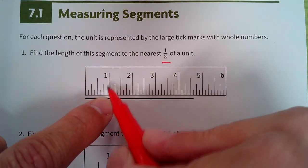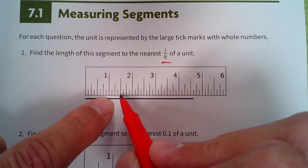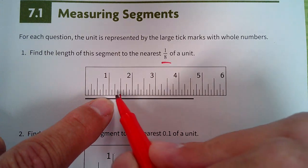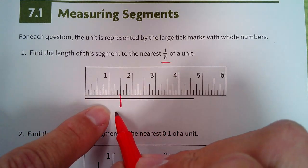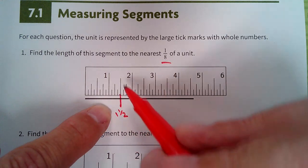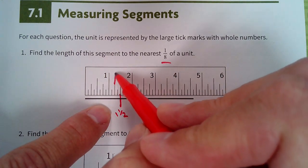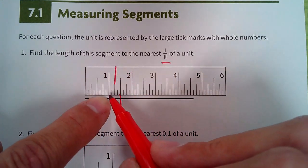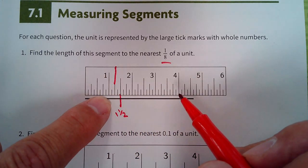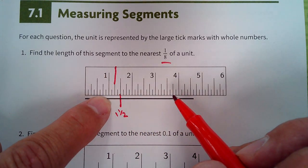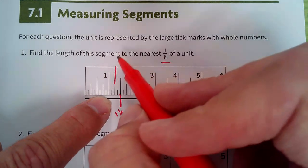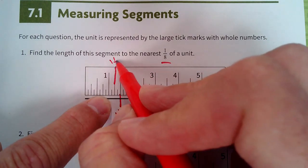So this is 1 right here. 1½ would be halfway between 2 and 3. What would the mark be between 1 and 1½? Anybody know it? This would be 1¼.